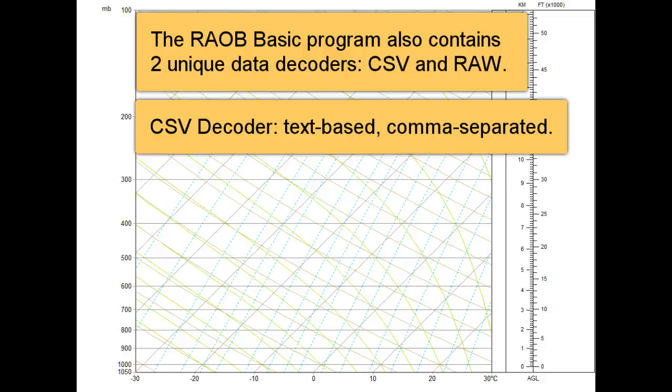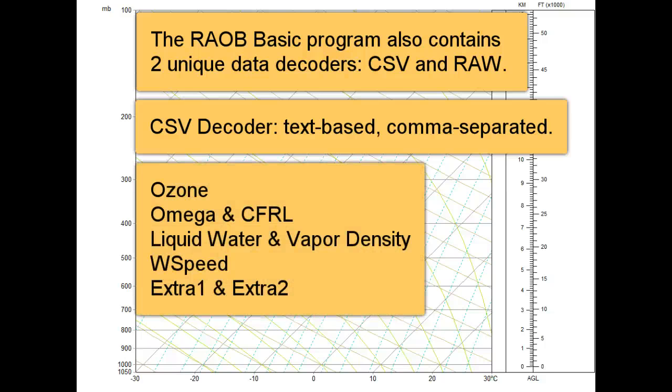but in addition to the standard sounding data information, it also permits coding of the following parameters: ozone, omega and CFRL data, which are produced by BuffKit soundings,